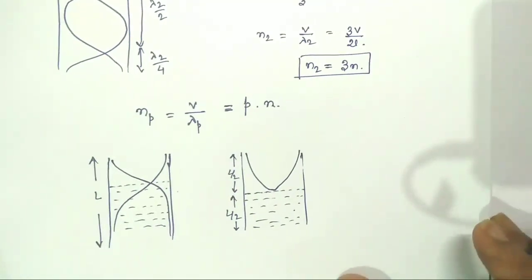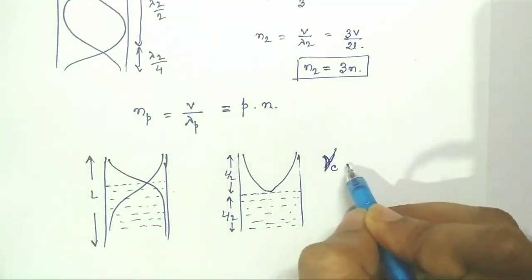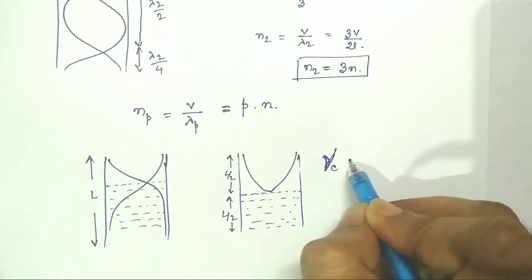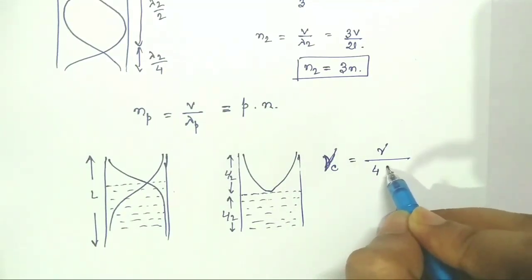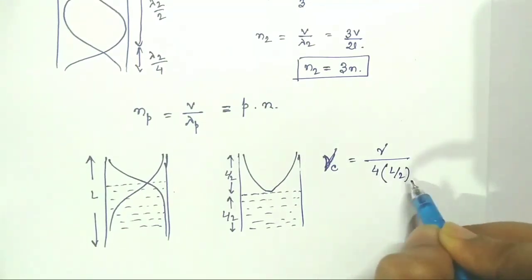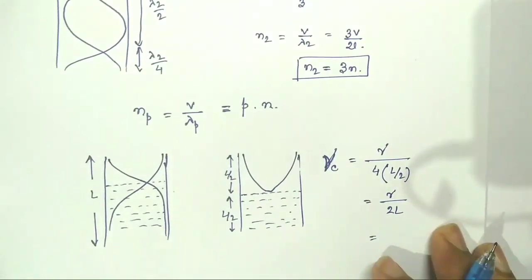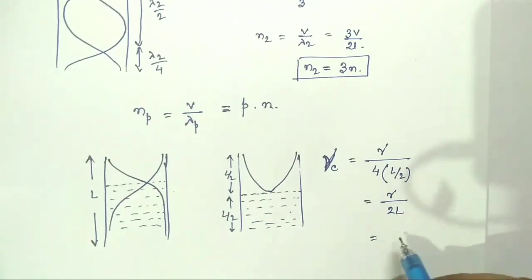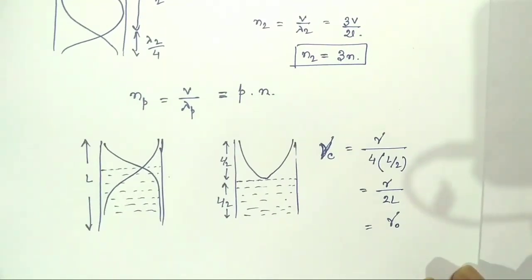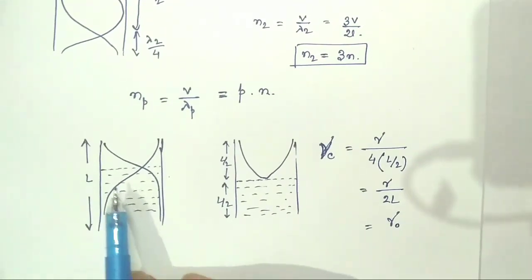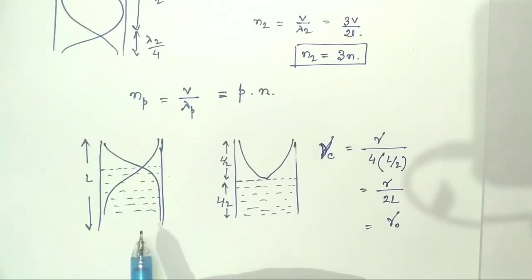What will be the frequency? The frequency Nu_C equals Nu divided by 4 into the length, where the length is actually L by 2, that is Nu by 2L. This is the fundamental frequency of an open organ pipe, that is Nu_O. So the frequency will remain unchanged. If you submerge an open organ pipe into water, the frequency of it will remain unchanged.